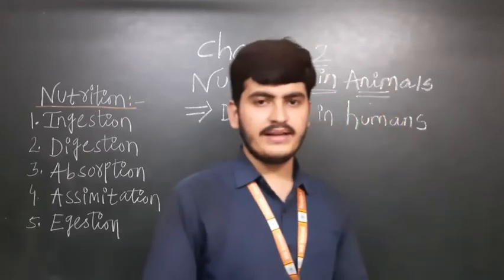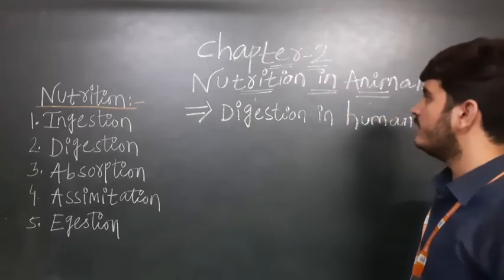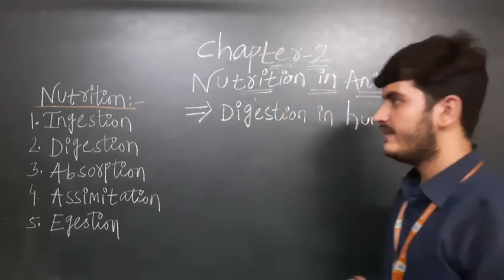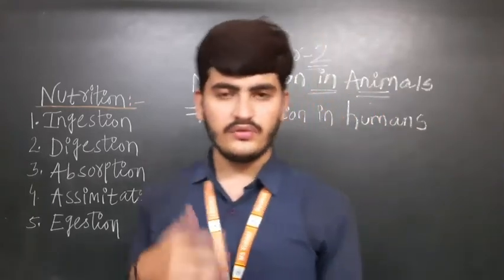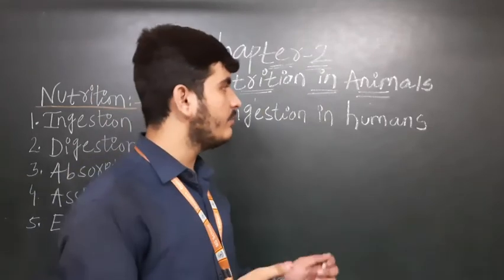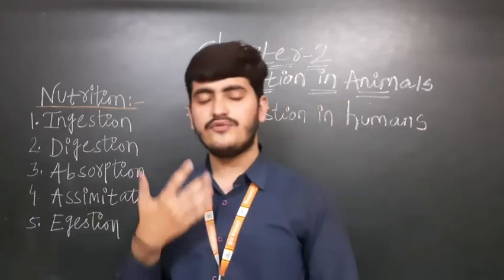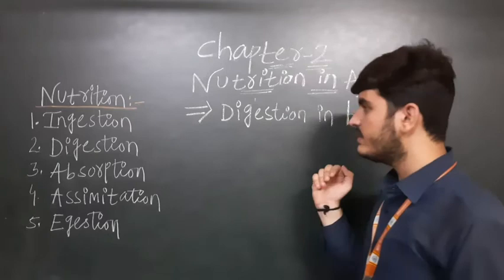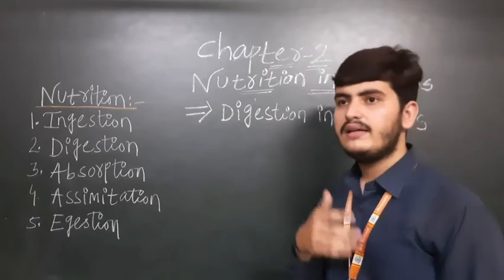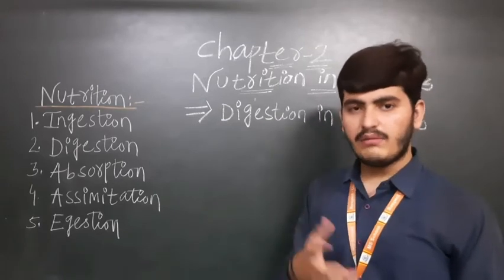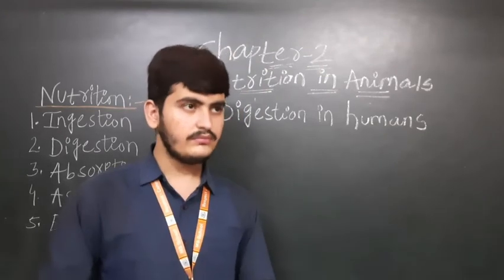Good morning students, welcome back to our channel. Today is the part two video of chapter two, that is 'Nutrition in Animals.' In part one, we covered four learning outcomes: different ways of eating food, digestion in grass-eating animals (herbivorous), and feeding and digestion in humans. We have completed the first of those four topics.